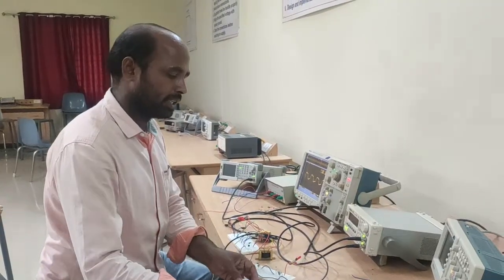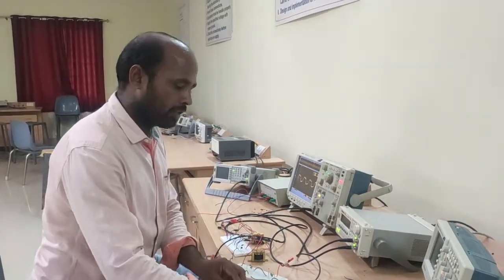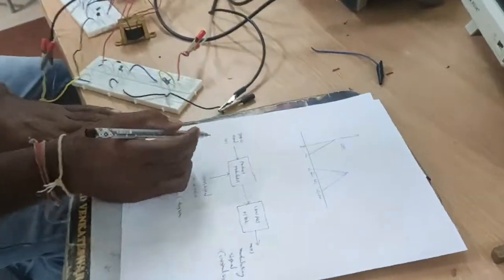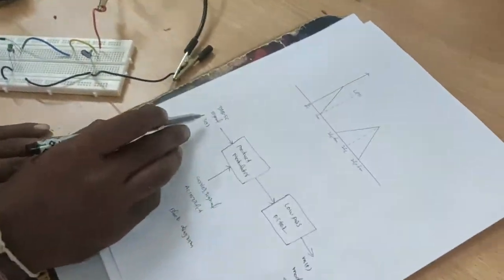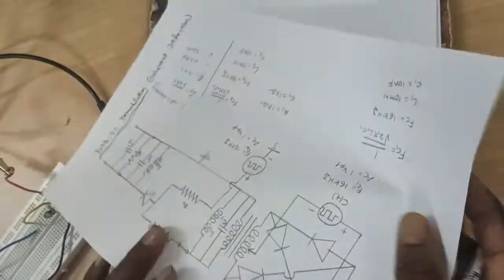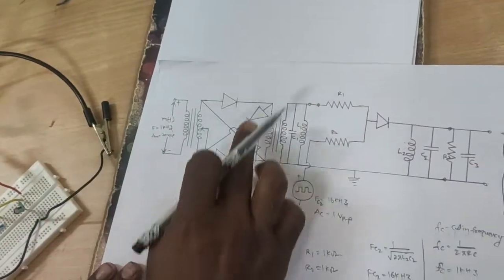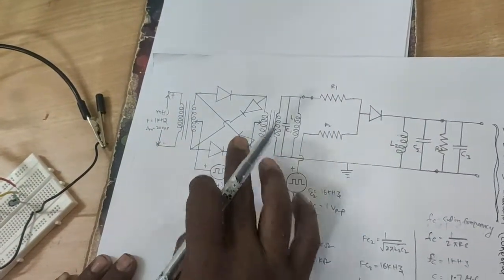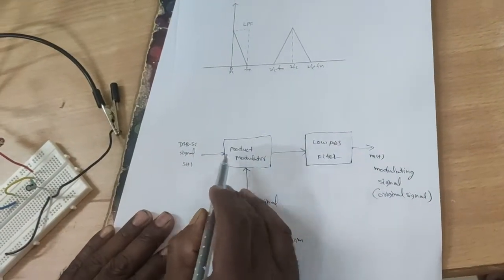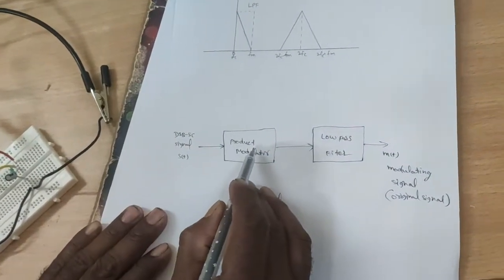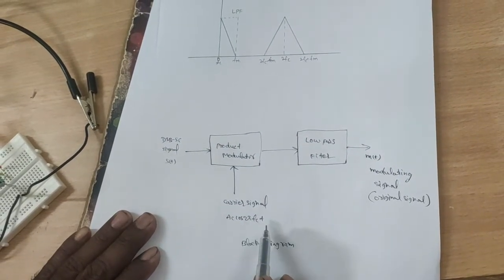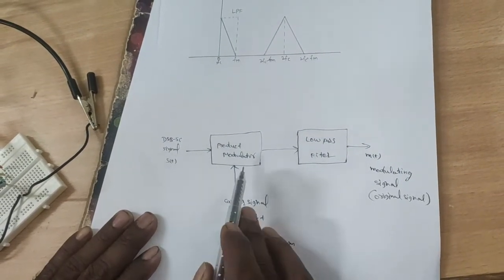Now for DSBSC demodulation using coherent detection. This is the block diagram. The DSBSC signal is obtained from the ring modulator. The ring modulator output is given to a product modulator, where another input is the carrier signal Ac·cos(2πfct). The product modulator output is then given to a low-pass filter.